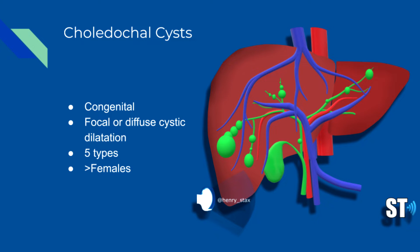Choledochal cyst is a congenital dilatation of the bile ducts. It is more common in East Asian populations. It is most commonly discovered in childhood, though up to 20% can be found in adults.